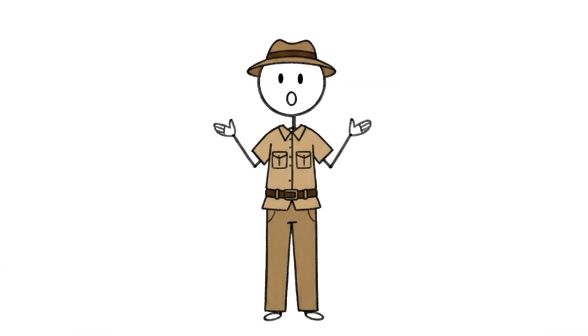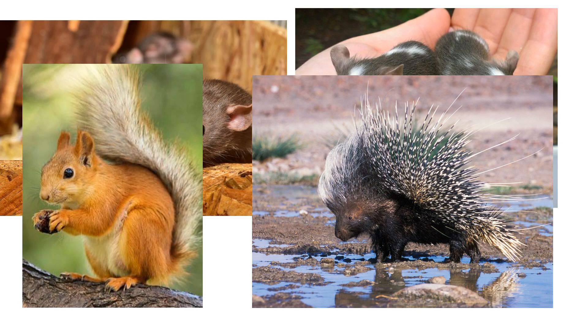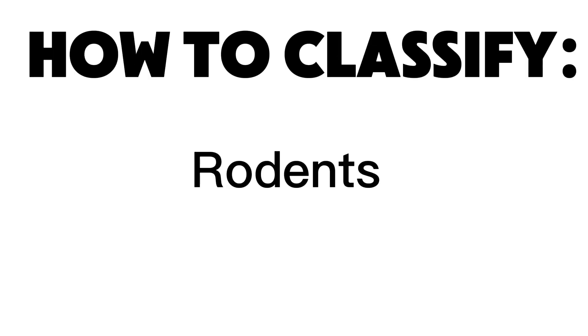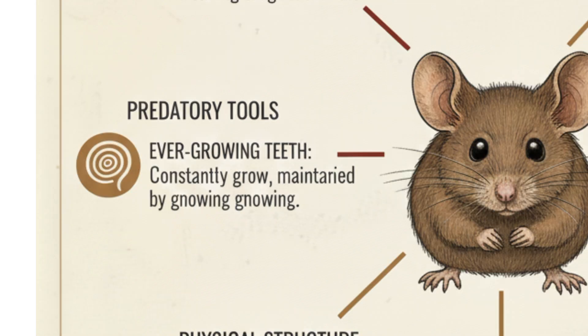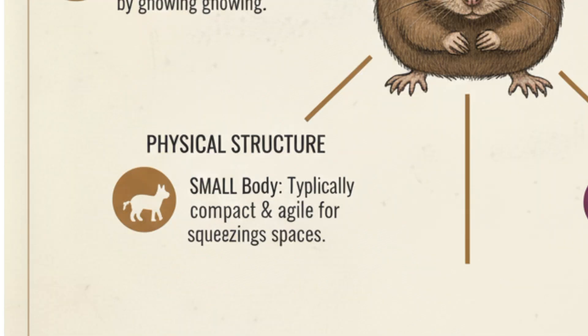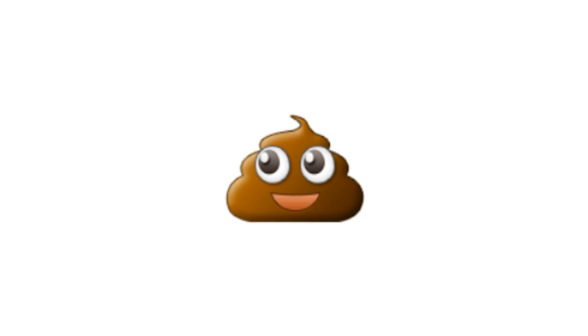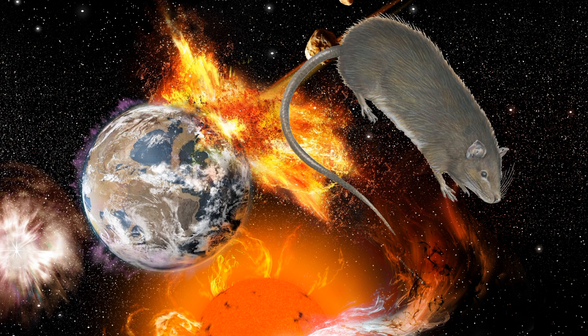Rodents — the small survivors. Rats, mice, squirrels, porcupines. Rodents don't die, they multiply. How do you classify a rodent? If an animal has two large front teeth that never stop growing, a small body, and a chewing addiction — it's a rodent. They can live anywhere: cities, forests, sewers, even your roof. If the world ended, rodents would be the only ones left doing business as usual.